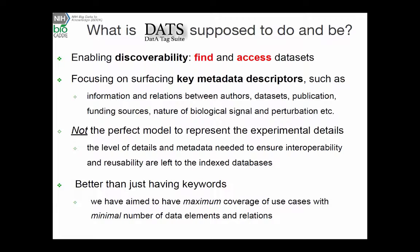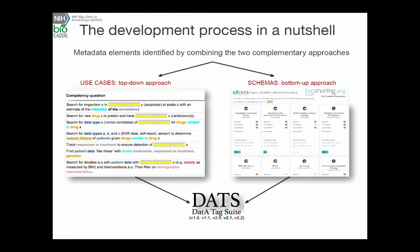We mapped these schemas together to find commonality and help define the different entities and properties that are good for discovering datasets. In the end, we converged on a set of elements from the use cases and the data models, splitting them into what we think are the core entities — generic and able to describe any dataset in any domain — and a set of extended elements more specific for descriptions of biomedical and life science datasets. When we defined these, we tried as much as possible to adopt elements defined in other models, like DataCite.